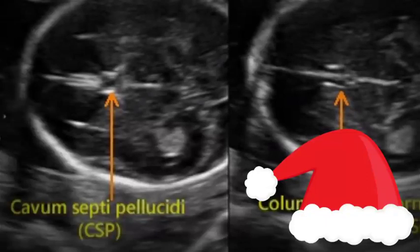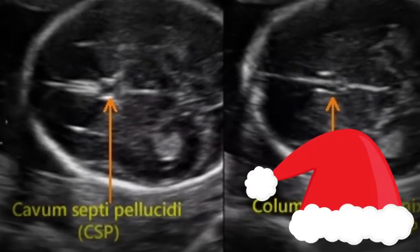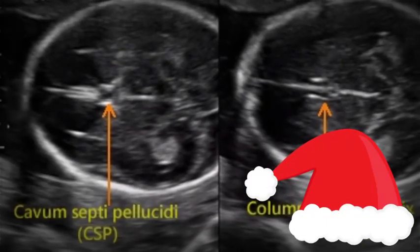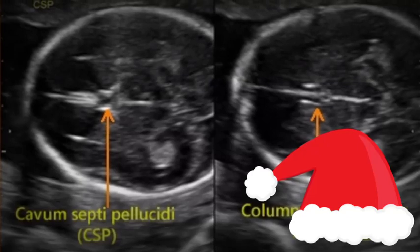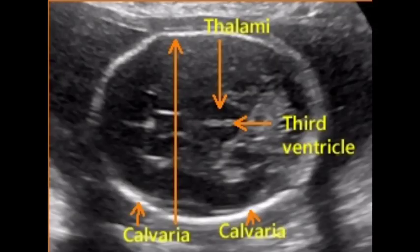The BPD should be measured on an axial plane that traverses the thalami and cavum septum pellucidum. The transducer must be perpendicular to the central axis of the head, and thus the hemispheres and calvaria should appear symmetric. The calipers should be placed at the outer edge of the near calvarial wall and the inner edge of the far calvarial wall. The cerebellar hemisphere should not be in the plane of the image.